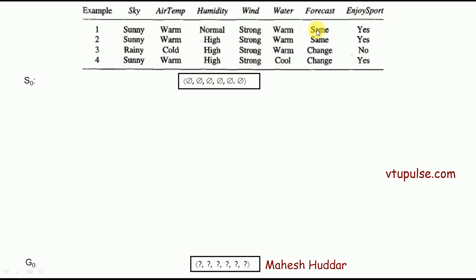We consider the first example, which is a positive example. Because it is a positive example, we first go to the generic boundary and check whether the hypothesis is consistent or not. If it is consistent, we retain it; otherwise, we write the next general hypothesis. The hypothesis at the generic boundary contains all question marks, which will match with sunny, warm, normal, strong, warm and same. Because it matches and is a positive classification — which is expected — G1 remains the same.